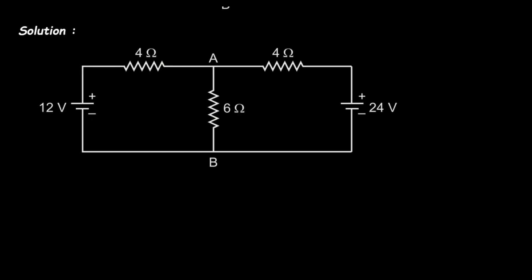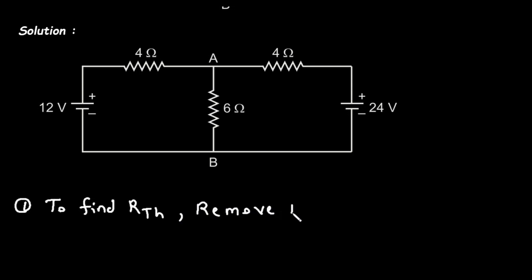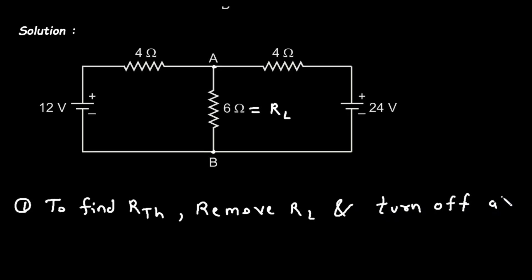Solution. First of all, we will take this circuit. Next, we will find the value of RTH. So step number one is to find RTH. Now to find RTH, we have to remove RL. Since we have to find the Thevenin's equivalent circuit across these two terminals, this will be our RL — that is, the load resistor. So remove RL and turn off all independent sources.